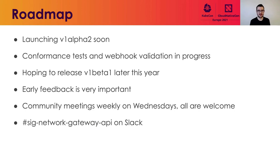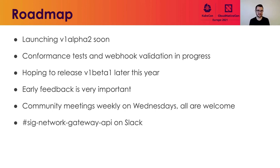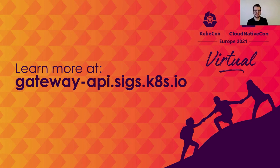Until we get to V1 Beta 1, we can still make significant changes — so your feedback in the next few months is critical. If you have ideas for how we can improve or change this API, please let us know. We have community meetings every Wednesday — everyone's welcome, it's an open agenda. Feel free to add something to the agenda, create a GitHub issue, whatever it is, we'd love your ideas. We're also on Slack — find our Slack channel, SIG Network Gateway API. And if you're interested in more information about the API, check out our website at gatewayapi.sigs.k8s.io. Thanks so much for your time — have a great rest of your KubeCon.